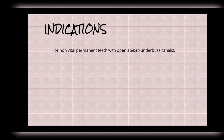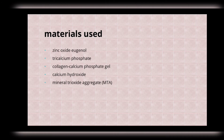To seal the root end, materials used include zinc oxide eugenol, tricalcium phosphate, collagen calcium phosphate gel, calcium hydroxide, and mineral trioxide aggregate (MTA).